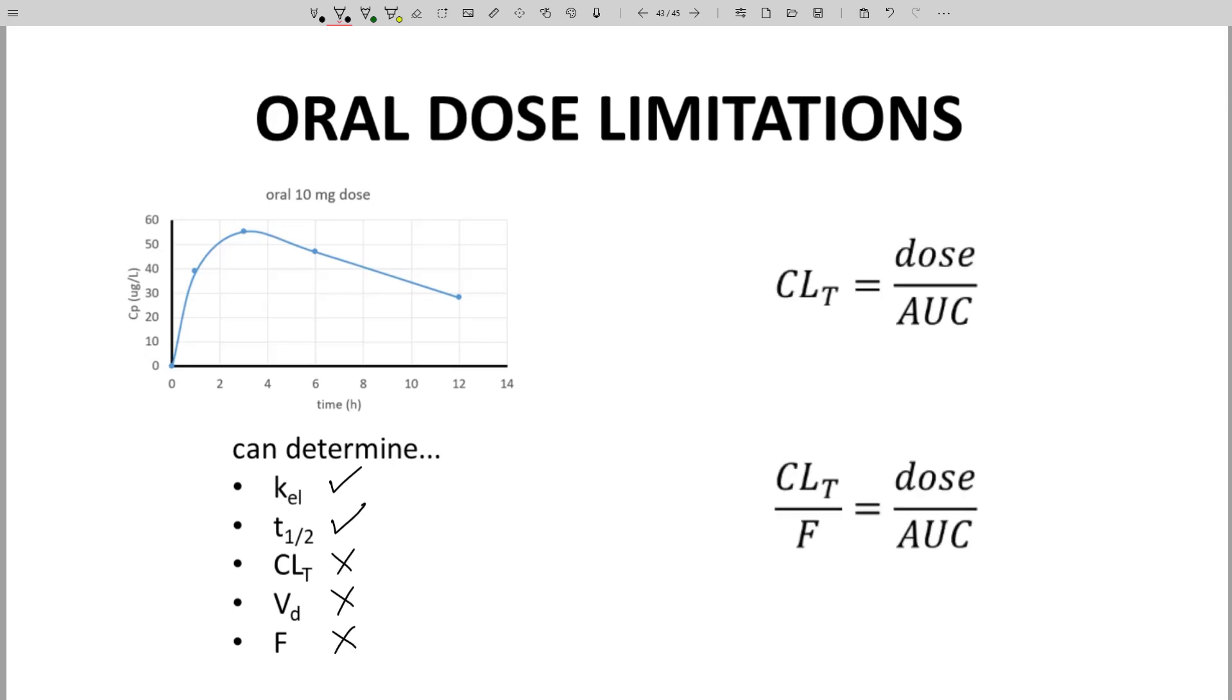Here's the issue. Look at our equation for clearance. It's in the upper right. We need the dose and AUC. Getting AUC from an oral dose curve is not a problem. Surprisingly, the dose is the problem. We might know the dose that was administered to the test subject, but we cannot be certain how much of the dose actually made it to the plasma to contribute to the AUC calculation.